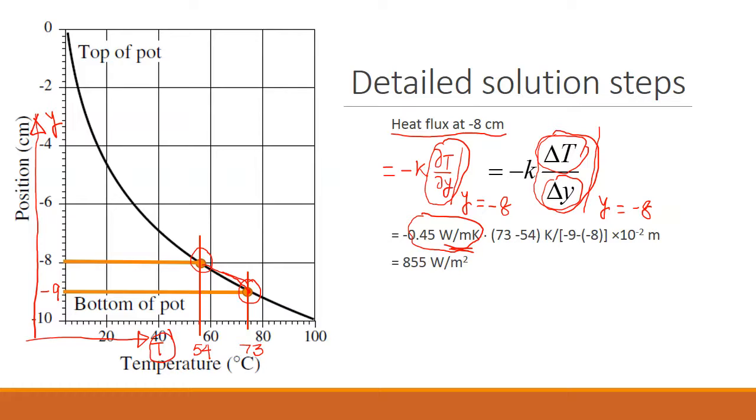And so 73 minus 54 divided by minus 9 minus minus 8 is equal to 855 watts per meter squared. So the temperature is decreasing this way, so the heat flow is happening in this direction. And the flux at minus 8, at this point, the heat flow that is happening is 855 watts per meter squared.